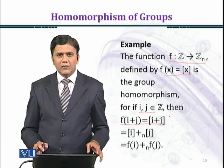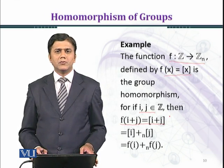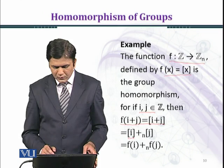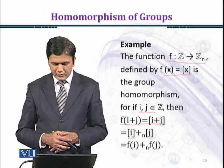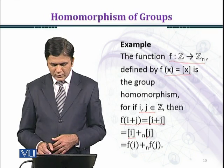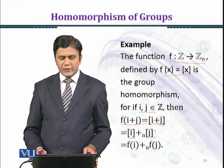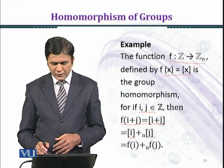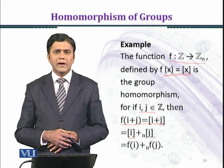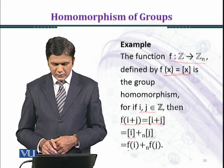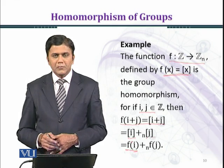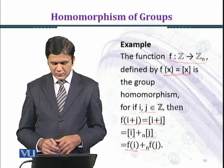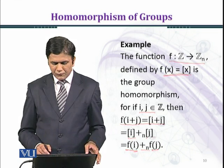We have already discussed the residue classes, and as you know that it's equal to [i] class under addition modulo n [j] class, [i]+[j]. And by using the definition f(x) equal to [x], and in the reverse direction we shall get f(i), image of i under f, addition under modulo n, f(j), image of j under f.